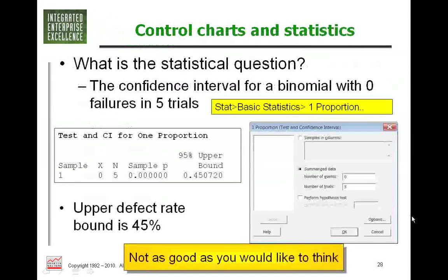If we go into Minitab, basic statistics, one proportion, and look at the confidence interval — that's an upper rate of 45%. So basically testing five of them like this is not going to give you the confidence that you might think. Perhaps you need to do it a different way — maybe stress it to failure so you at least have a continuous response. However, you still don't have a random sample of the future, and that remains a real problem.